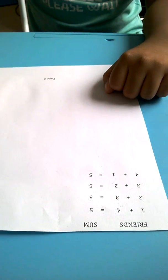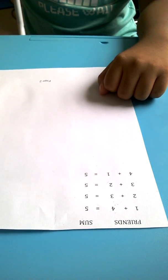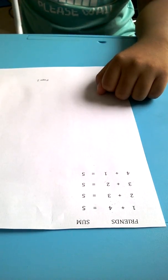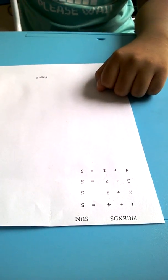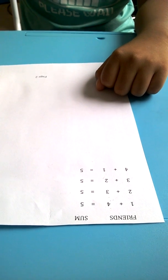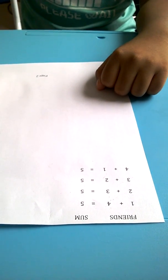The next step in addition and subtraction is to learn about 5 and 10 bonds. Today we will learn about 5 bonds. 5 bonds are the numbers which when added together give you the sum of 5.